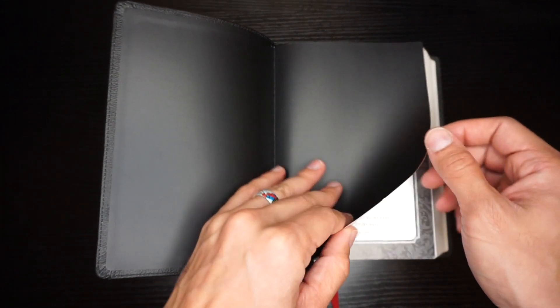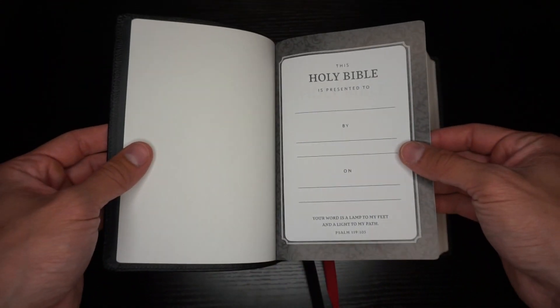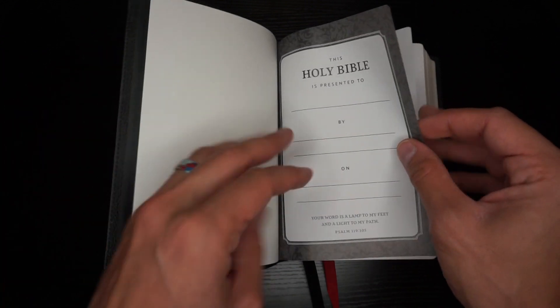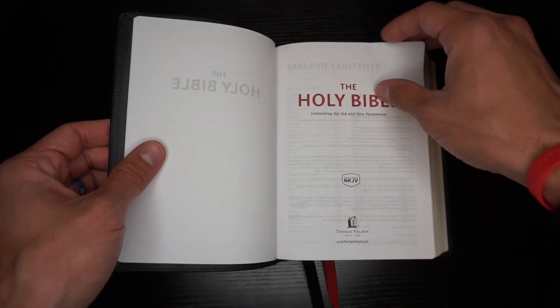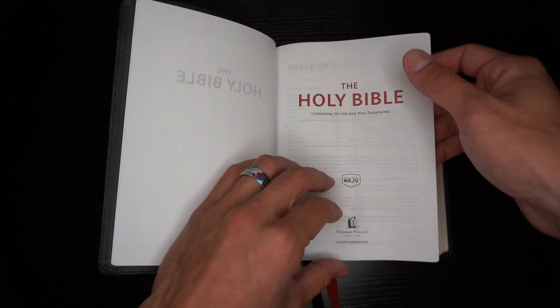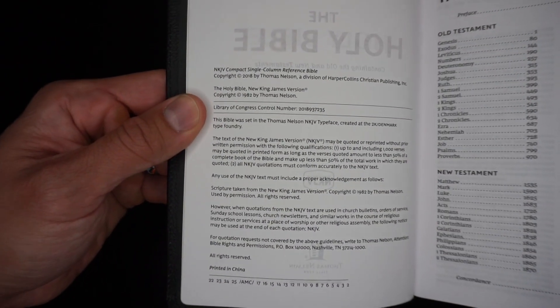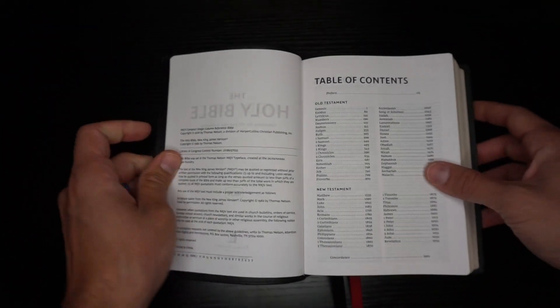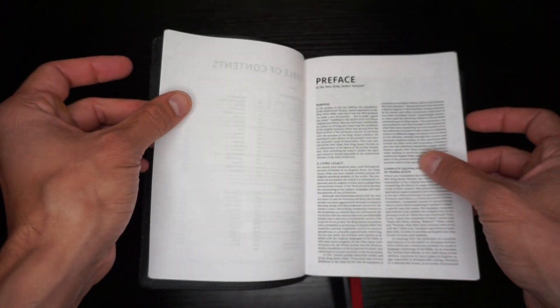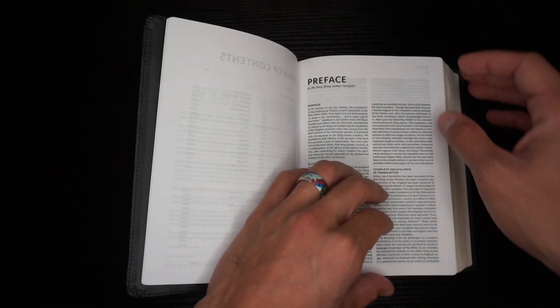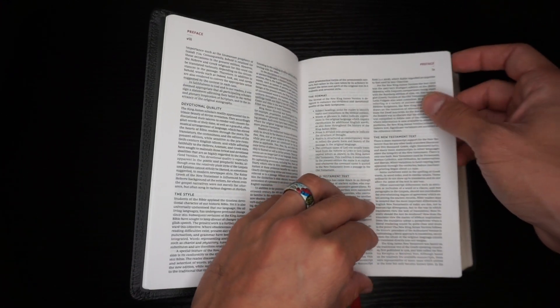Okay, gonna open this up. You're gonna have a synthetic black paste down liner here. This Bible is Smith sewn as well. This is going to have a presentation page on a thick glossy paper. The Holy Bible containing the Old and New Testaments NKJV Thomas Nelson.